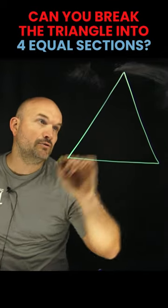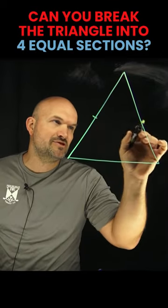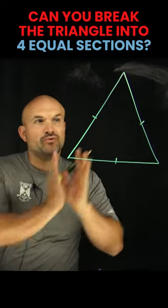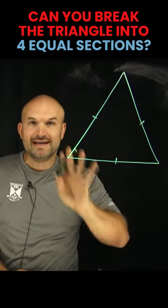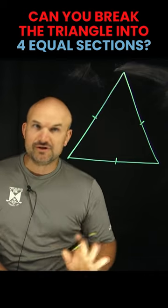So this is going to be what we call an equilateral triangle. All side lengths are supposed to be equal. Now, if I wanted to break up this triangle into four equal triangles, there's two techniques we can actually use to do that.